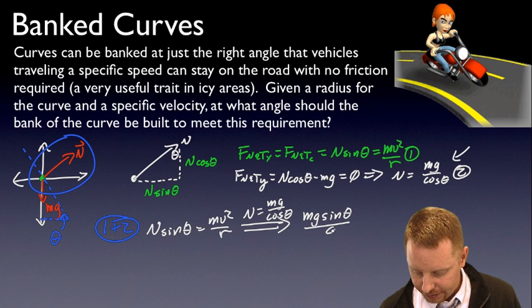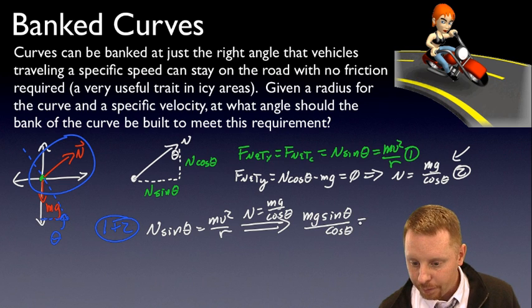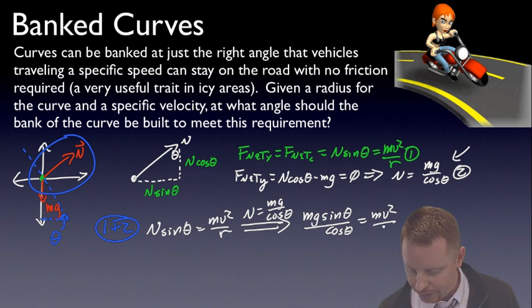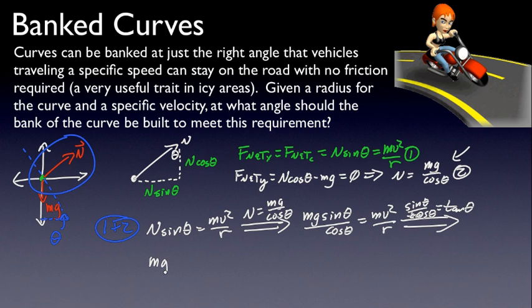Now a simple trig identity, sin theta over cos theta is equal to the tangent of theta. So sin theta over cos theta equals tan theta allows me to rewrite this as mg tan theta equals mv squared over r.